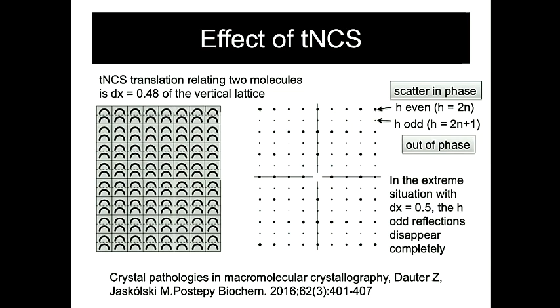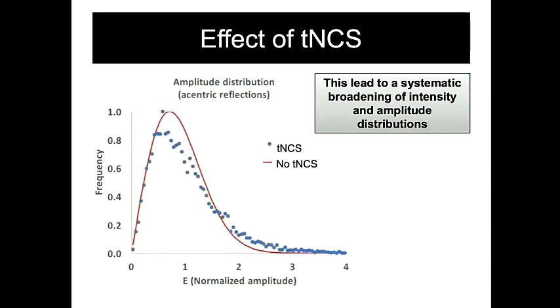This is easy to understand in an extreme situation when we have a translation vector of exactly one half. In this case, the H index odd reflections will completely disappear and the unit cell becomes half the size. We can also see this effect in the amplitude distribution — in cases with TNCS, indicated by the blue dots, this distribution is broader than for a normal crystal.